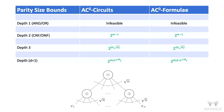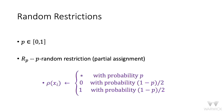That covers upper bounds. For lower bounds, random restrictions are a powerful tool: parity hardly simplifies when hit with a random restriction, whereas AND and OR gates dramatically simplify. You use this to reduce depth, and at depth one you know how to distinguish. For more than four or five decades, random restrictions have been used as a powerful tool to understand the power of low-depth computation.